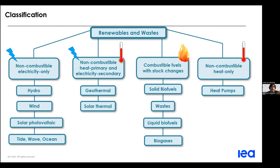For the second and fourth groups, the primary form is heat. For the second group, the production is considered in the form of heat because there are two possible outlets: heat that can be directly used, for example using geothermal heat for district heating, or heat that can be used to generate electricity, for example in a solar thermal power plant. The fourth group includes the heat extracted from the environment and used in heat pumps, and in this case it is not possible to convert it into electricity, so it is reported in a separate category.